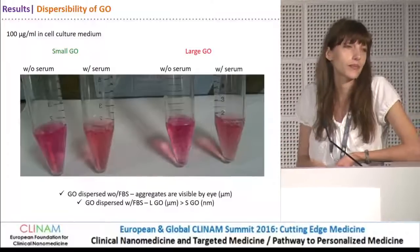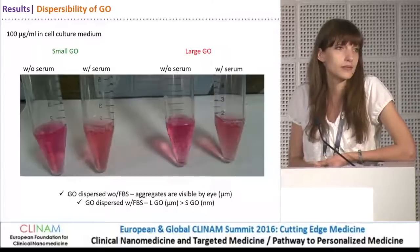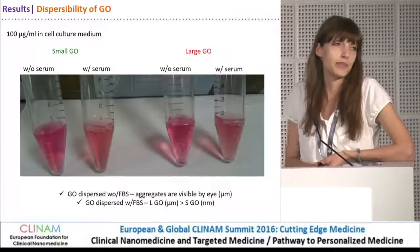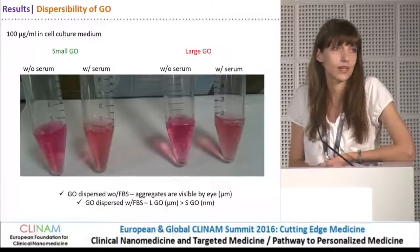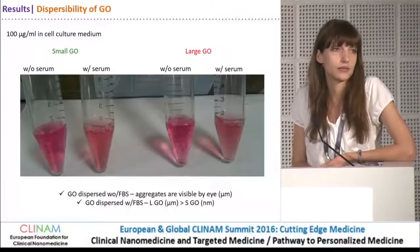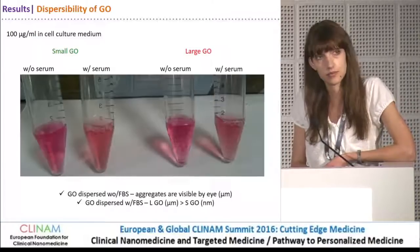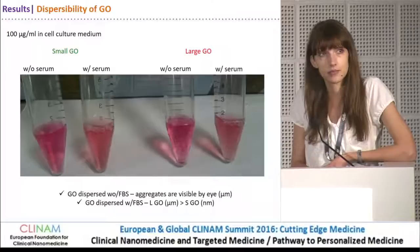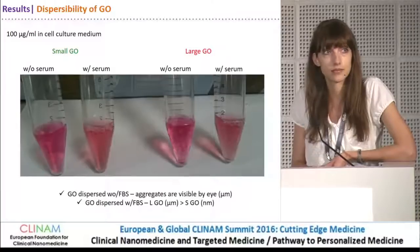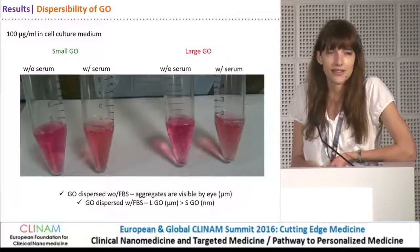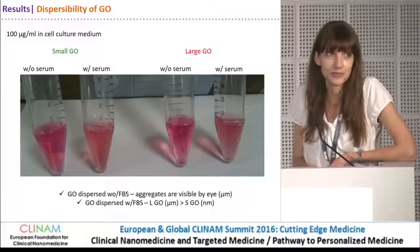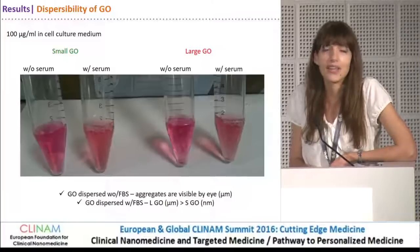Your cells are not phagocytic — they are epithelial cells. So do you have any explanation for why the larger ones could be more toxic despite having less tendency to enter into the cells?